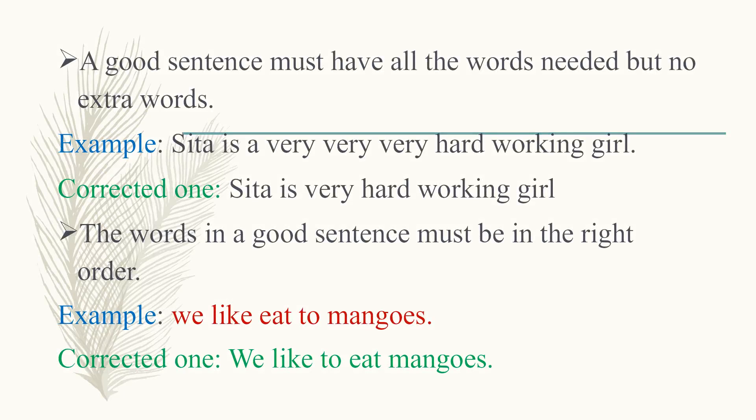A good sentence must have all the words needed but no extra words. Avoid usage of words which convey the same meaning again and again. Example: 'Sita is a very very very hard working girl.' This does not sound good. We can say 'Sita is a very hard working girl' — there is no change in the meaning.